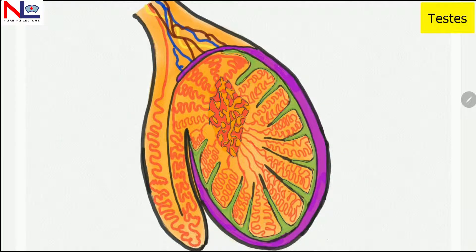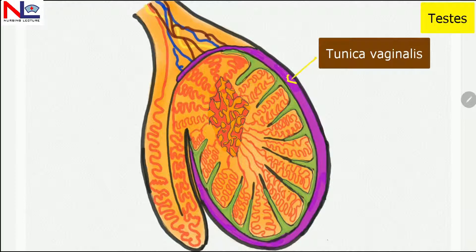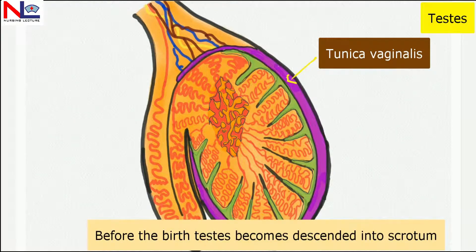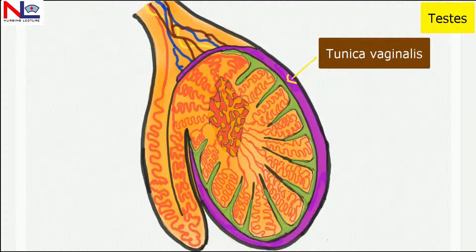Let's have an interior view of the testes. Here you can see the outermost lining, termed the tunica vaginalis, which is a serous membrane derived from the peritoneum. When the testes descend into the scrotum outside the pelvic cavity, it forms a sac-like structure covering the testes externally, entering through the inguinal ring. At the upper end where it enters, it becomes obliterated.